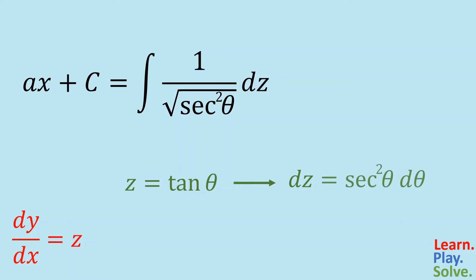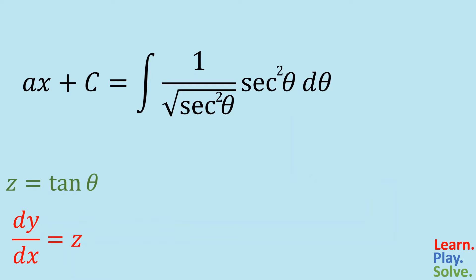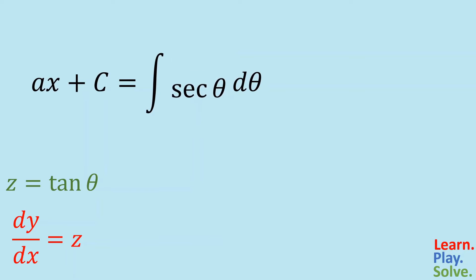This gives us a new differential. Now if we simplify, we end up with just the secant of theta. The antiderivative of secant is a common one that you may have memorized, or you can find it on just about any integration table, but I'll show you how to work it out either way.